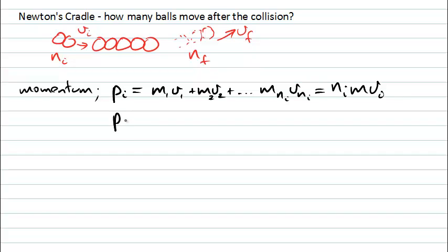And we can see that the same kind of approach applies for the final momentum, that is just after the collision, where again we have some identical masses, all moving off with some final speed, and we will actually have n final of those.